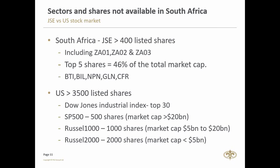The Dow Jones Industrial Index covers the top 30 stocks — it's a price-weighted average of 30 significant stocks traded on the New York Stock Exchange and the NASDAQ. It was founded in 1896 by Charles Dow and his partner Edward Jones, launched with only 12 companies that were almost purely industrial: railroads, cotton, gas, sugar, tobacco, and oil. The only original component still in the Dow today is General Electric.